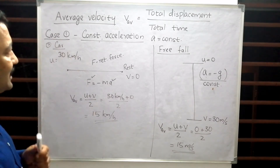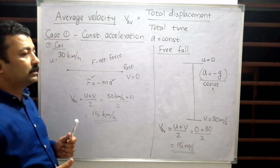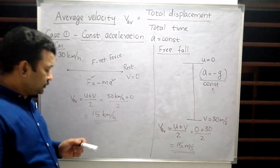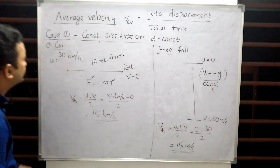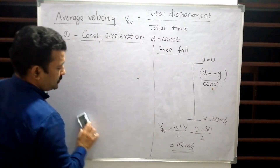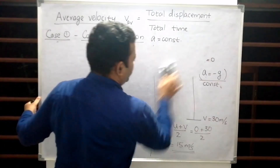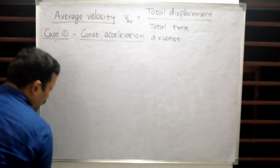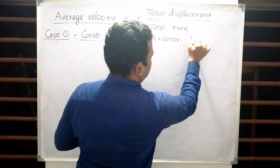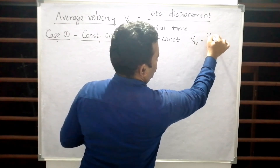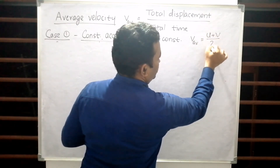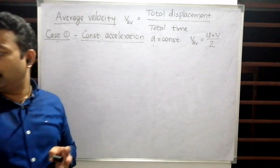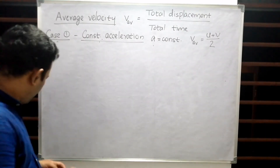That is the way to solve questions when particles are accelerated uniformly at a constant rate or retarded by a constant force. So, for Case 1 — when acceleration is constant — V_average equals (u + v)/2. That is the expression for average velocity. Now let us see the other cases, where acceleration is not mentioned.